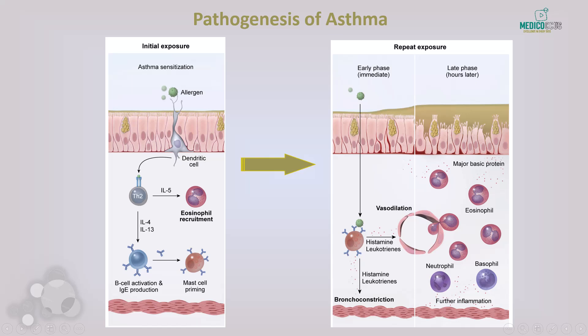The late phase occurs several hours after initial exposure and is characterized by the recruitment of additional inflammatory cells including eosinophils, neutrophils, and basophils. Eosinophils release toxic proteins like major basic protein, which cause damage to the airway epithelium, leading to ongoing inflammation, airway hyper-responsiveness, and remodeling. This phase can cause more severe and prolonged symptoms even without continued exposure to the allergen.